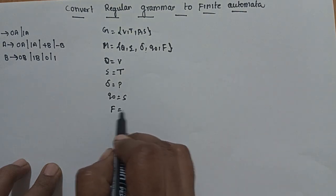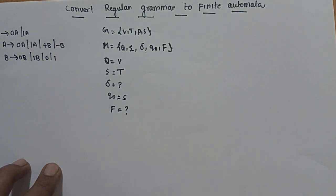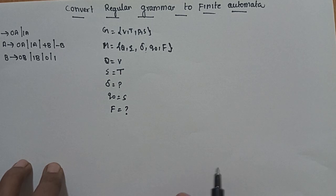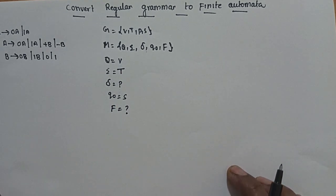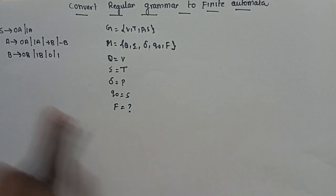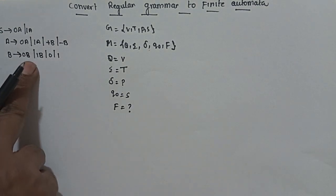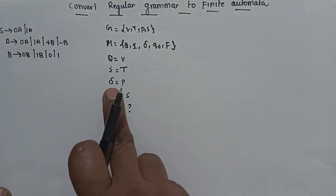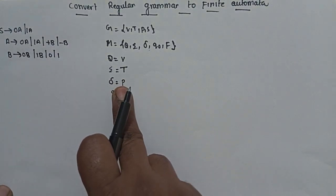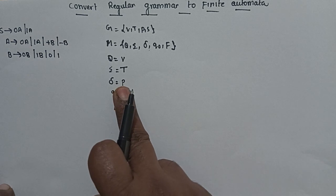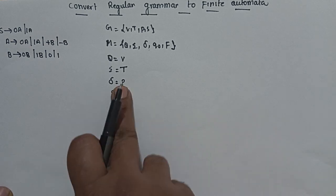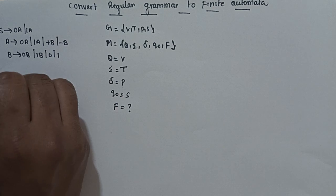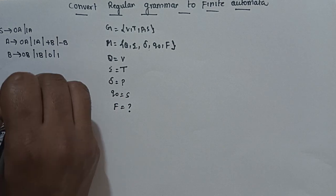Next, the final state. We will find out the final state in the finite state automata using the transition function.